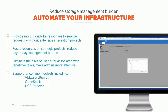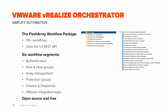Our VMware vRealize Orchestrator tool set includes a workflow package with well over 110 workflows using our REST API. It's available from both Pure and VMware and lets you perform common VMware operations — authentication, hosts and host groups management, and much more as listed. Like all our software, this is open source and included at no additional charge. Download it from community.purestorage.com. We also have good demo videos online at purestorage.com showing the automation in action.